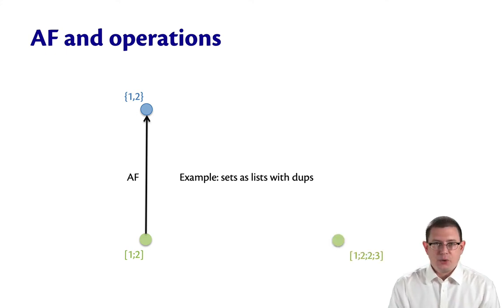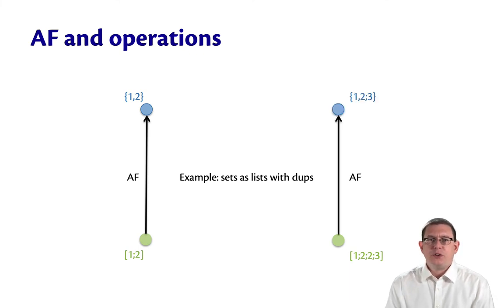Now imagine that I had another list: [1,2,2,3]. This is allowed. Duplicates are fine. If I use the abstraction function to think of that as a set, it's just the set {1,2,3}.